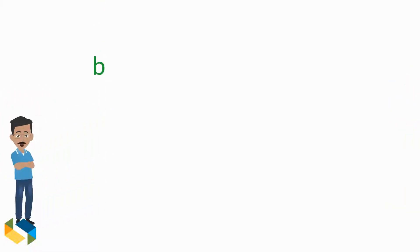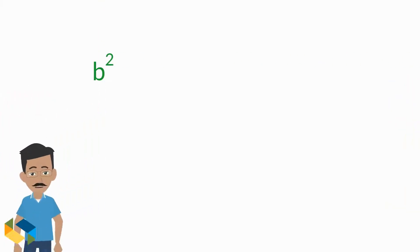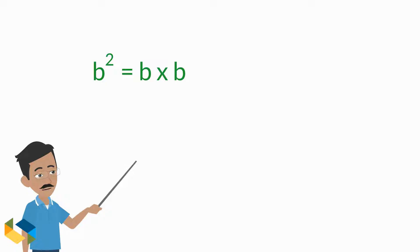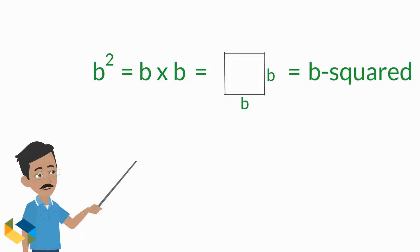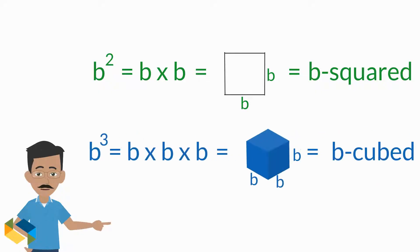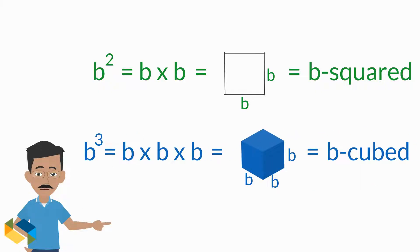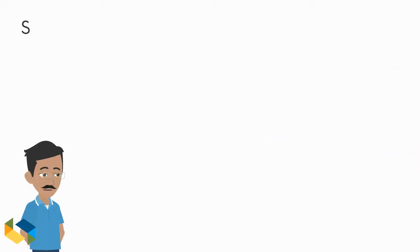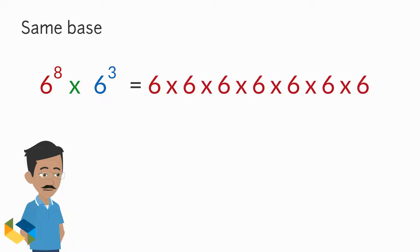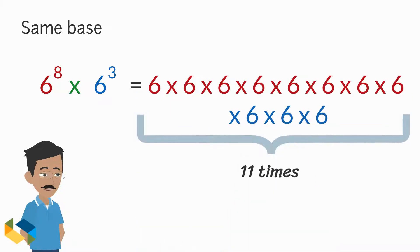Now let's take an expression where the exponent is two. B raised to the power two is also simply called the square of B, or B squared. Similarly, B to the power three is B cubed. Let's now multiply two expressions which have the same base: six raised to the power eight multiplied by six raised to the power three, or six cubed. Denoting this in the form of repeated multiplication gives us six multiplied by itself eleven times, which is six raised to the power eleven.